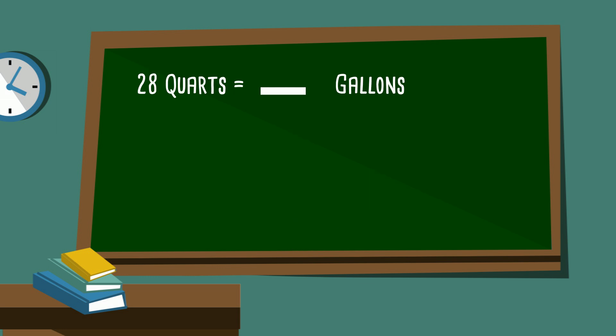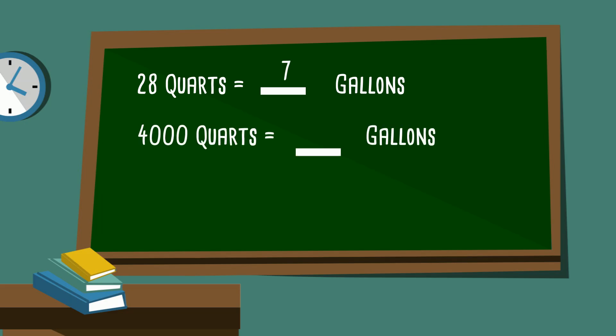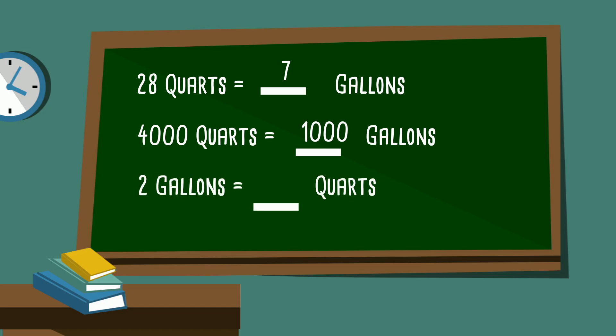28 quarts equals how many gallons? That's 7. 4,000 quarts equals how many gallons? 1,000. And 2 gallons equals how many quarts? That would be 8.